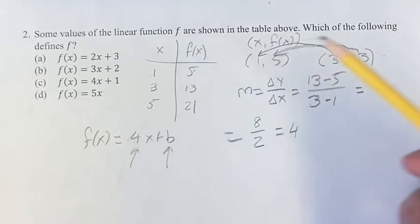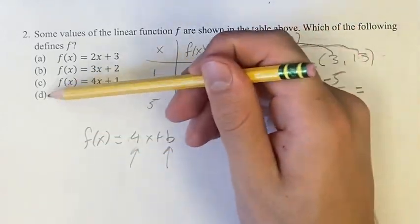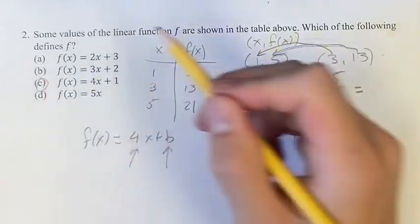And we don't know what b is, but it doesn't matter, because the only equation that has f of x is equal to 4x plus something is c. So c is going to be your final answer.